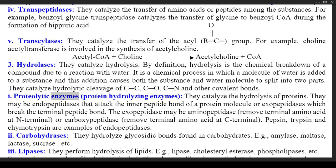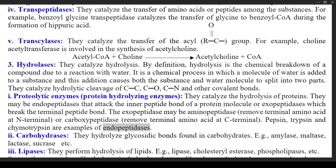(1) Proteolytic enzymes (protein-hydrolyzing enzymes) — they catalyze the hydrolysis of proteins. They may be endopeptidases that attack the inner peptide bond of a protein molecule, or exopeptidases which break the terminal peptide bond. Exopeptidases may be aminopeptidases (remove terminal amino acid at N-terminal) or carboxypeptidases (remove terminal amino acid at C-terminal). Pepsin, trypsin, and chymotrypsin are examples of endopeptidases. (2) Carbohydrases — they hydrolyze glycosidic bonds found in carbohydrates; e.g., amylase, maltase, lactase, sucrase, etc.